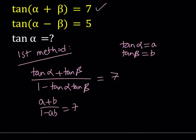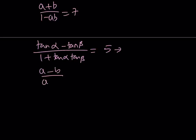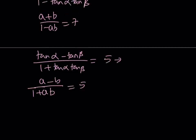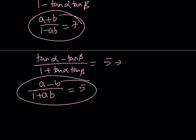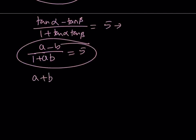This gives us the following equation: a plus b divided by 1 minus ab equals 7. Let's write down the second equation for tangent alpha minus beta. That is equivalent to tangent alpha minus tangent beta divided by 1 plus tangent alpha times tangent beta and it's given as 5. Using the same formula we can write this as a minus b divided by 1 plus ab equals 5.